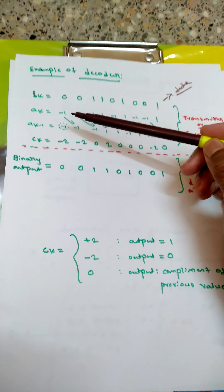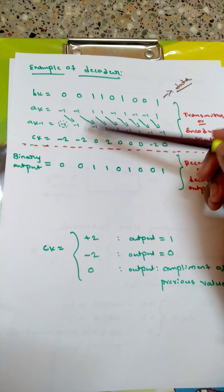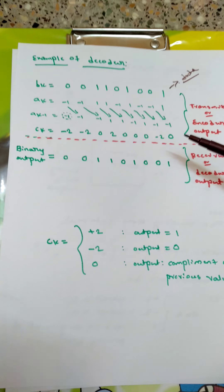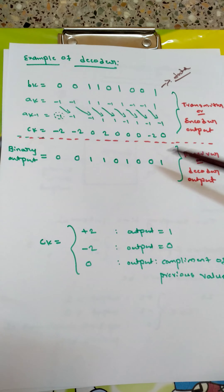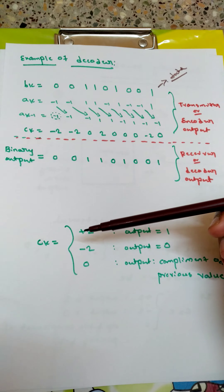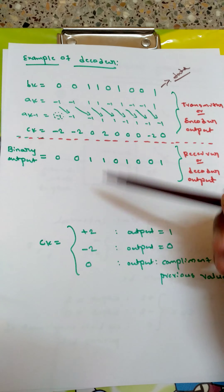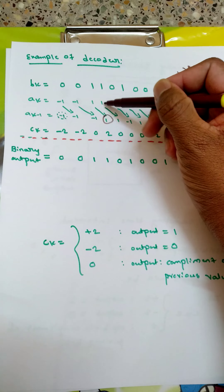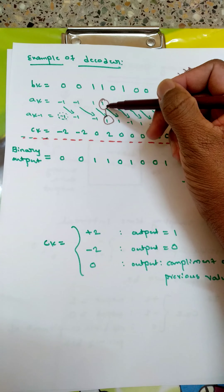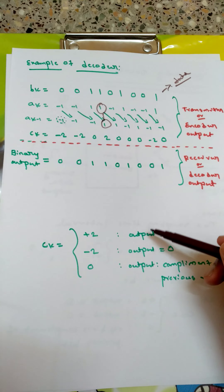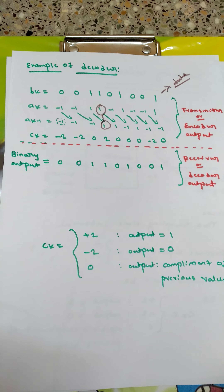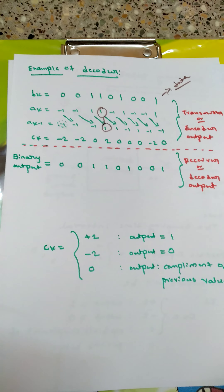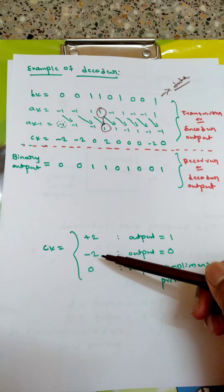The encoder output ck equals the addition of ak and ak-1, giving values: one, minus one, minus one, minus two, minus one, minus one, minus two, one, plus minus one, zero, and so on. Now, for the receiver or decoder output: when ck is plus two, the input bits are both one, so output is written as one. That is the algorithm of the duobinary decoder.